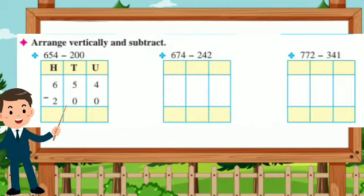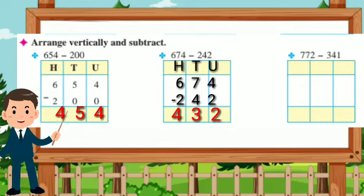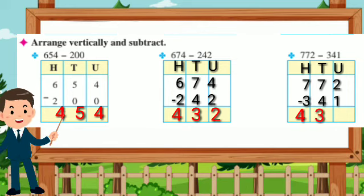Arrange vertically and subtract. 654 minus 200 is equal to 454. 674 minus 242 is equal to 432. 772 minus 341 is equal to 431.